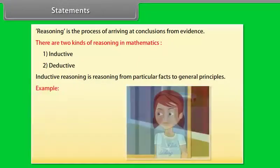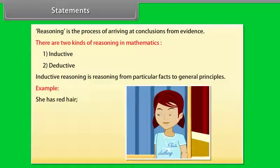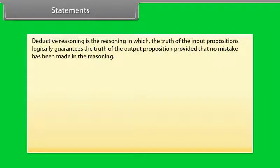Example of inductive reasoning: she has red hair, therefore she has a temper. Deductive reasoning is the reasoning in which the truth of the input propositions logically guarantees the truth of the output proposition,